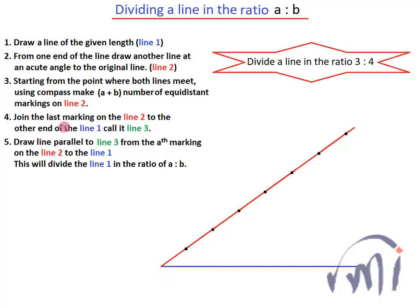Fourth is join the last marking on the line 2 to the other end of the line 1 and let's call it line 3. So from here I'll make one line and join to the other end of the blue line. And what is next?